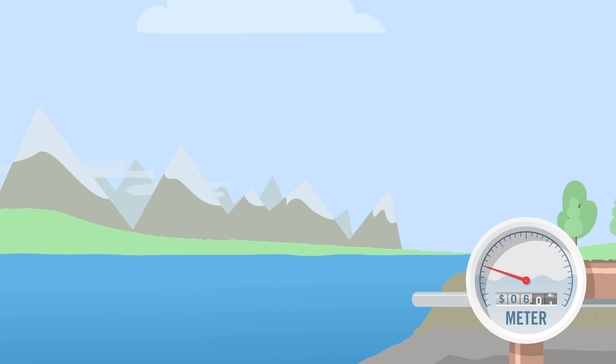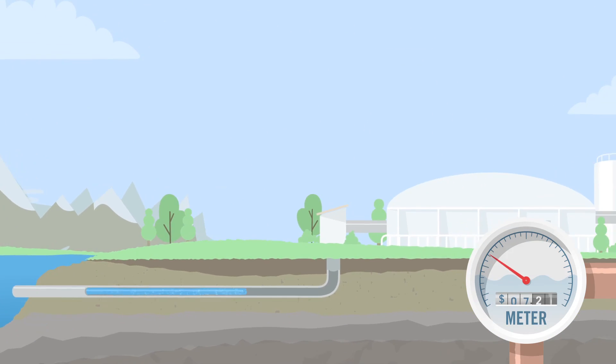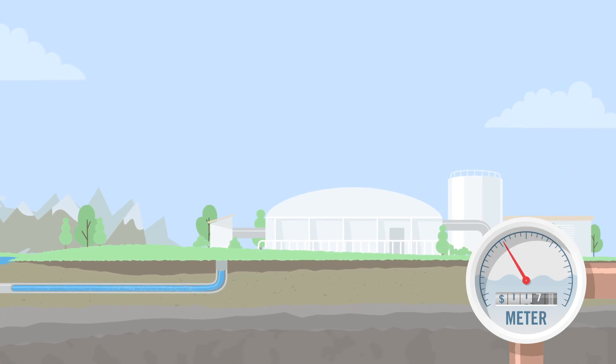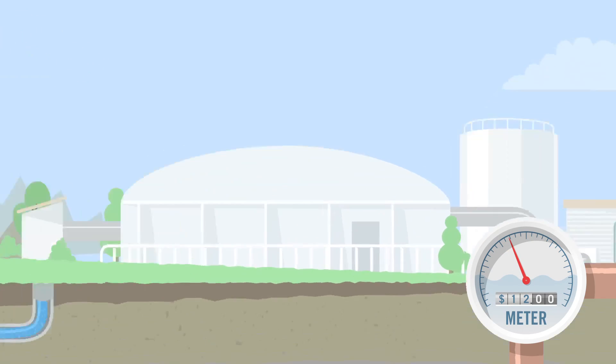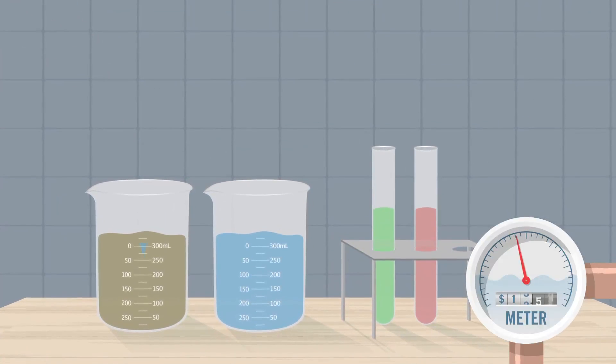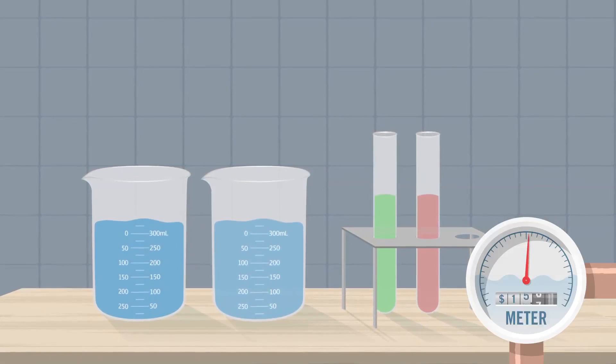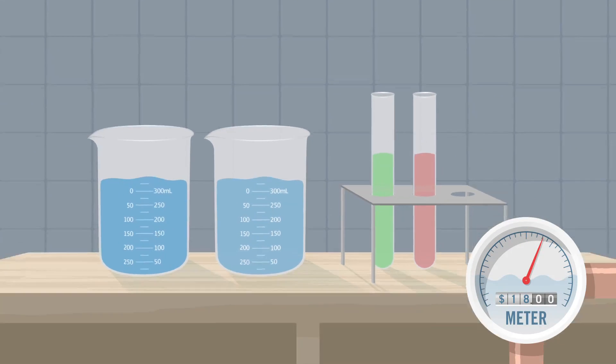Your water provider first pumps water from the source through underground pipes to a water treatment facility, which processes millions of gallons of water a day. Here it's cleaned, filtered, disinfected, and tested constantly by professionals until it's safe for you to drink.